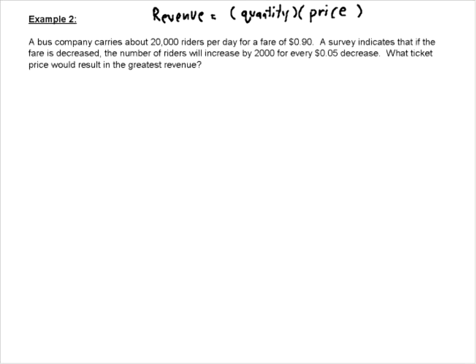So the bus company carries 20,000 riders for that price. What ticket price would result in the greatest revenue? Now, this is what's going to happen here: if we have 20,000 riders, every time we decrease this 5 cents, we are going to increase the number of riders. So every 5 cent decrease is going to increase the number of riders.